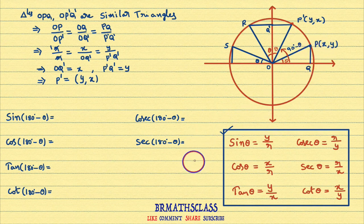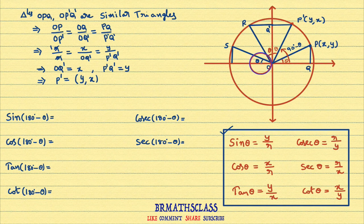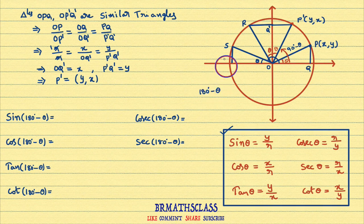Now, I rotate OP through some angle such that OS makes an angle of 180 degrees minus theta with the x-axis. This angle here is theta, and the full angle is 180 degrees. Since this angle is theta, OS makes 180 degrees minus theta with the x-axis. Please observe this carefully.